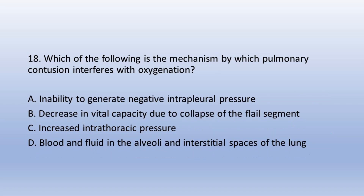Question 18. Which of the following is the mechanism by which pulmonary contusion interferes with oxygenation? A. Inability to generate negative interpleural pressure, B. Decrease in vital capacity due to collapse of the flail segment, C. Increased intrathoracic pressure, D. Blood and fluid in the alveoli and interstitial spaces of the lung. The answer is D. Blood and fluid in the alveoli and interstitial spaces of the lung.